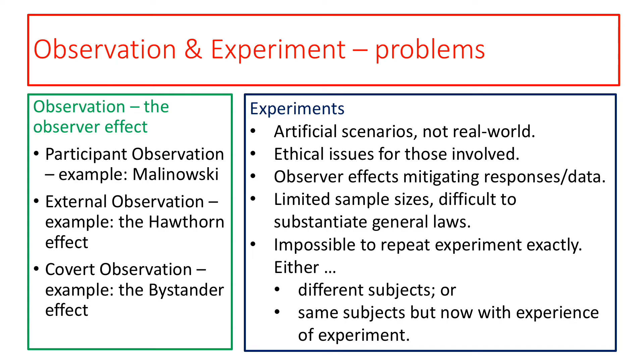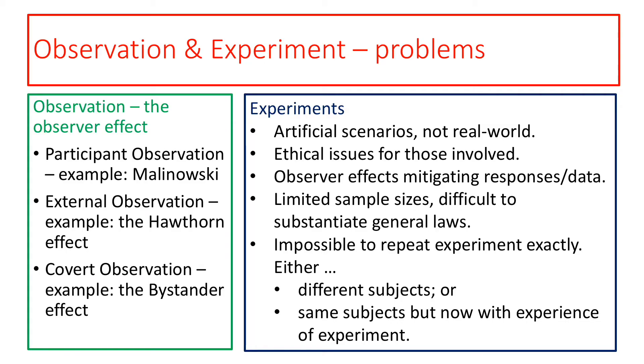Looking in a little more detail at the types of evidence available to human sciences researchers: the real issue for participant observation is the relationship of the researcher to the investigation. In the case of Malinowski, he was immersed in the society that he was observing. Therefore, his interpretation and conclusions of that investigation will be affected, firstly as he becomes a part of that society, and secondly because the society he is observing will be changed because of his presence.